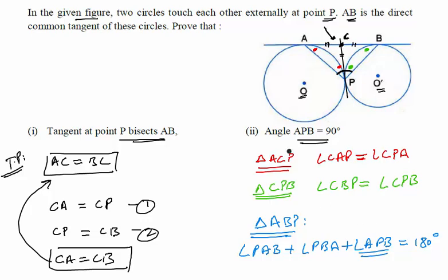APB is what we have to calculate, so we should not change this in the equation. But now let us look at the sum of angles PAB and PBA.